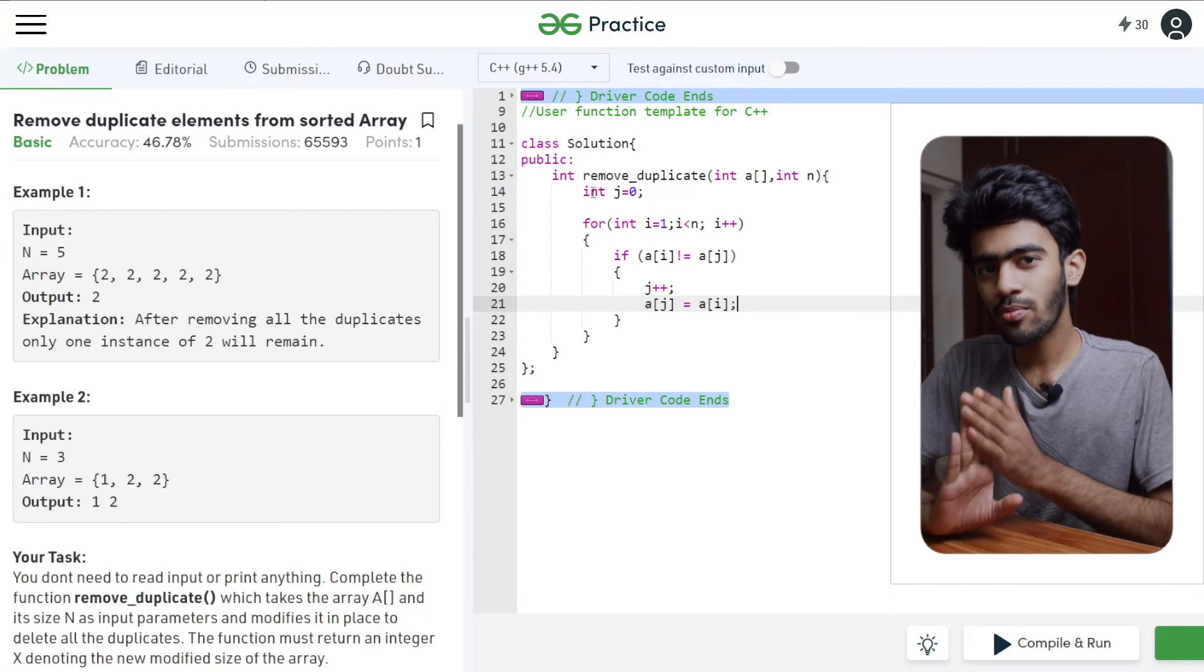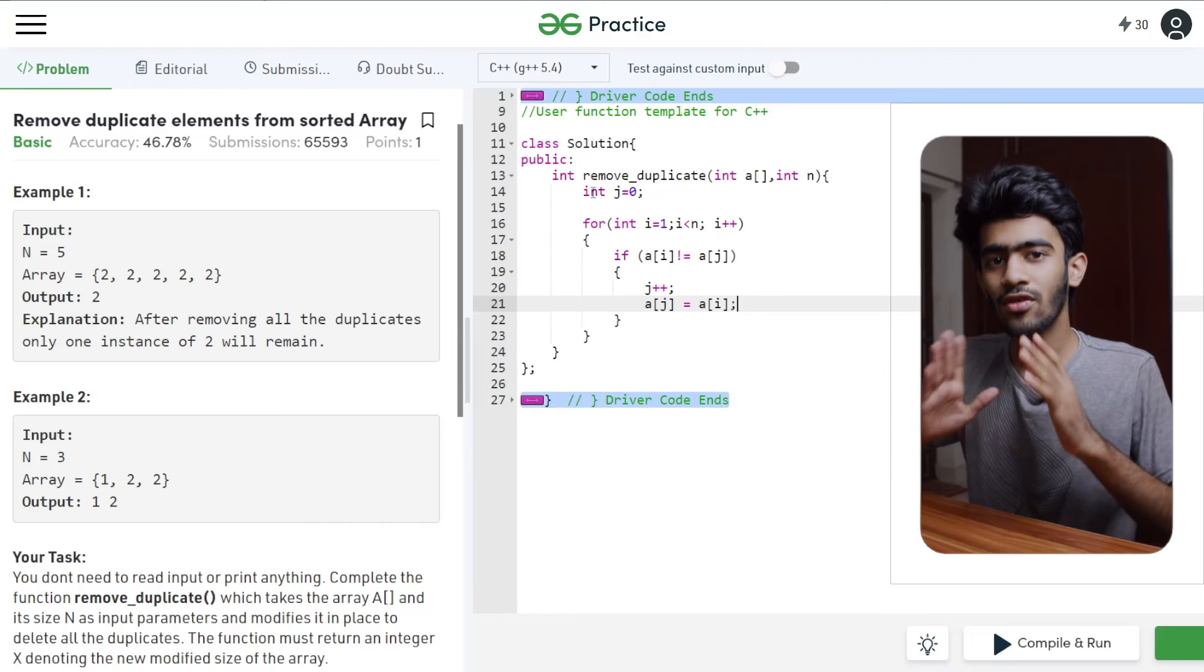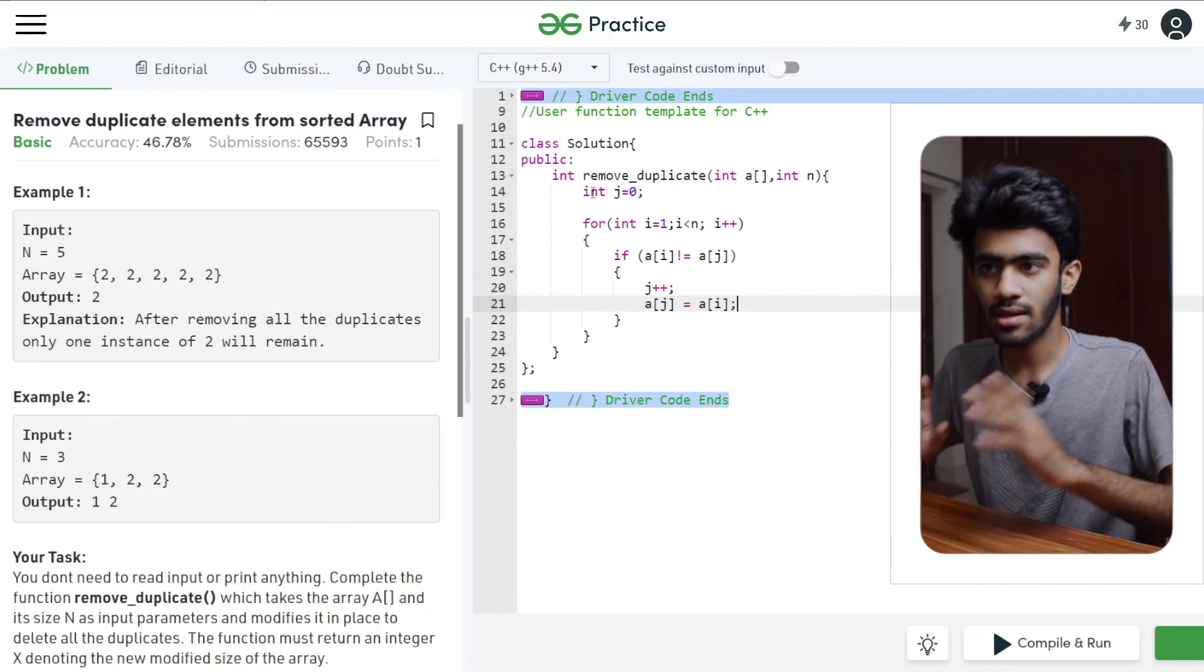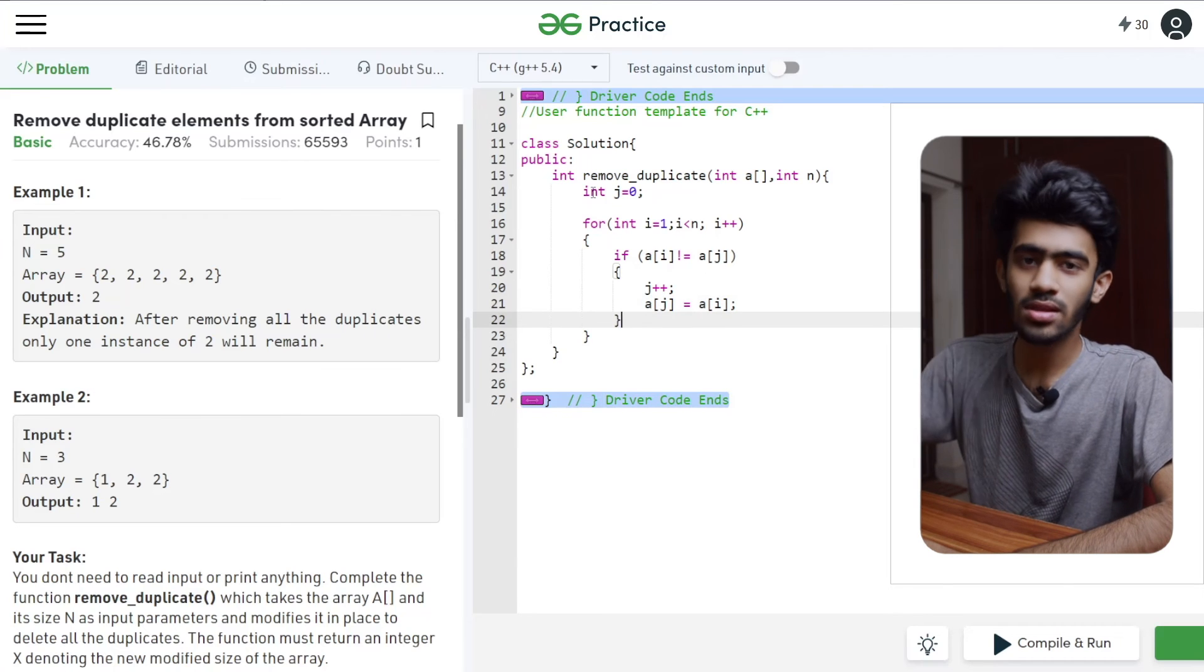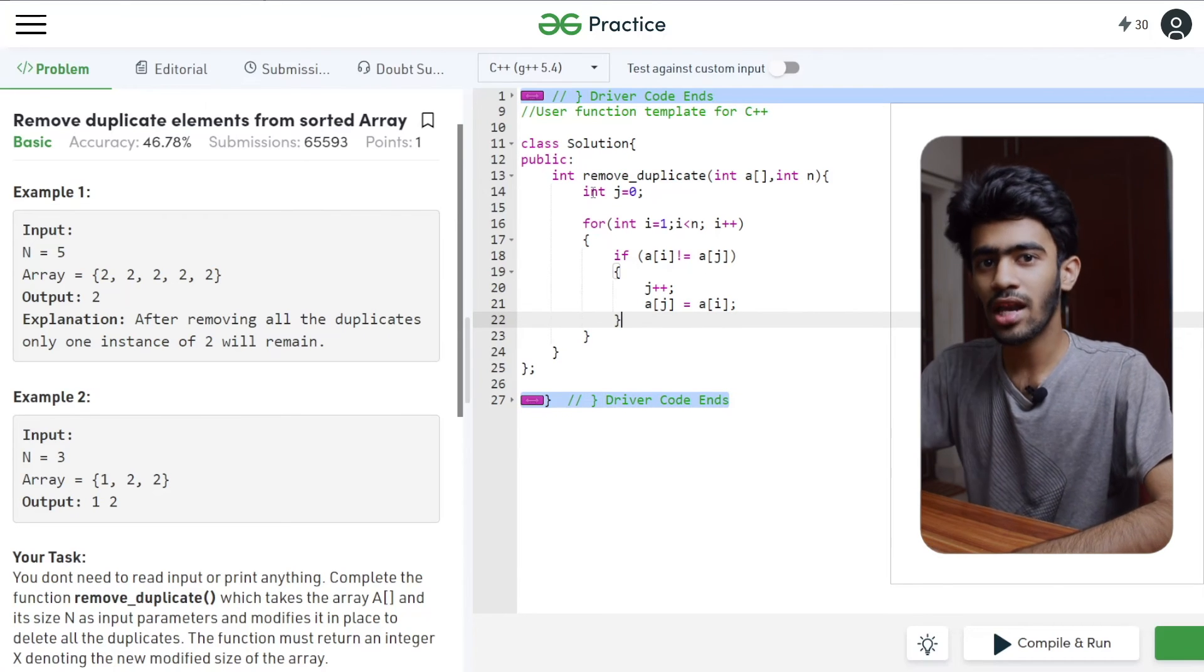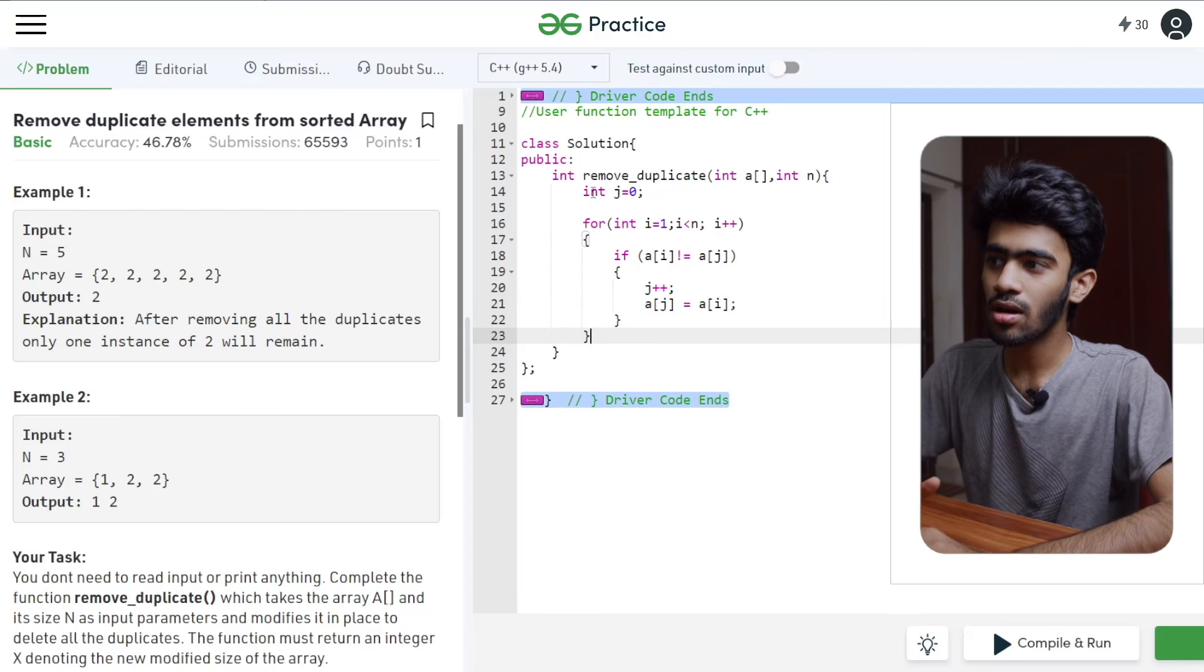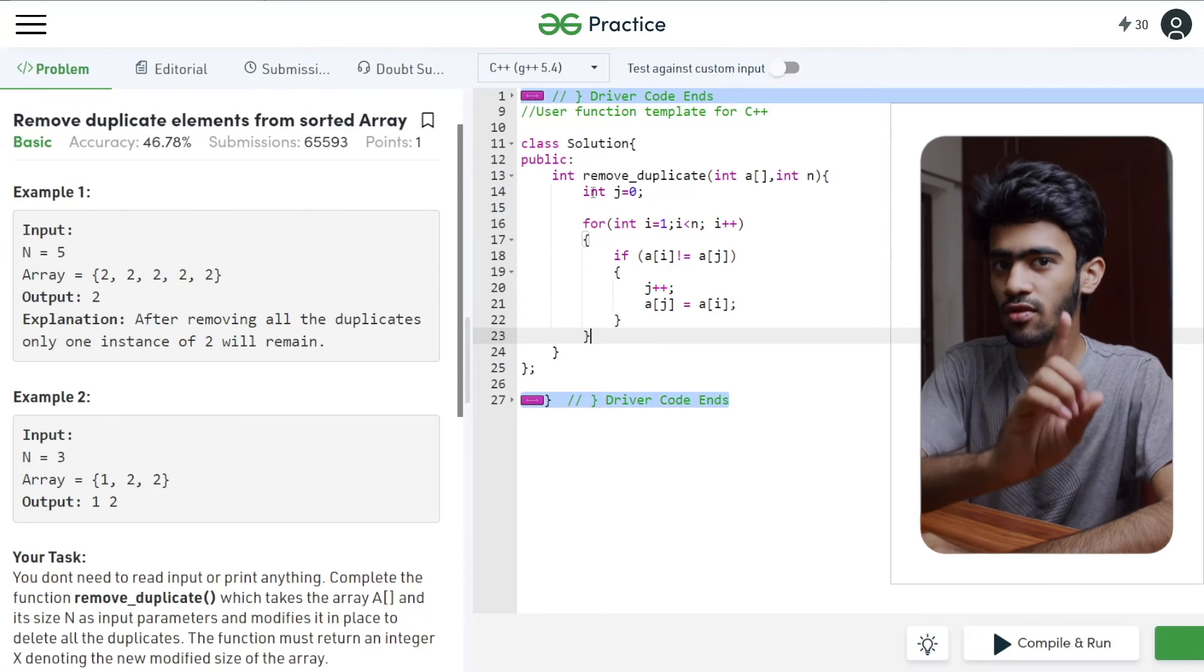That means that the pointer of point of position is sorted. It was a sorted array with no duplicates. So check this out. In the whole loop, we will point the value of the sorted array. We will point the j value.